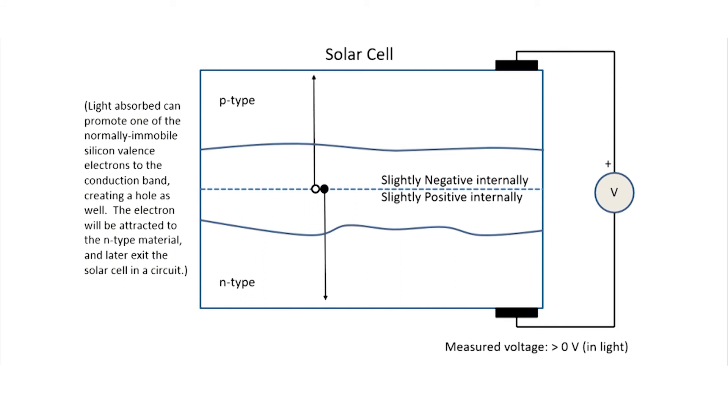Where's that hole going to go? And where's that electron going to go? Well, the hole will be attracted upwards to the p-type side because of the slight negative charge. And the electron will be attracted down here towards the n-type side because of the internal positive charge.